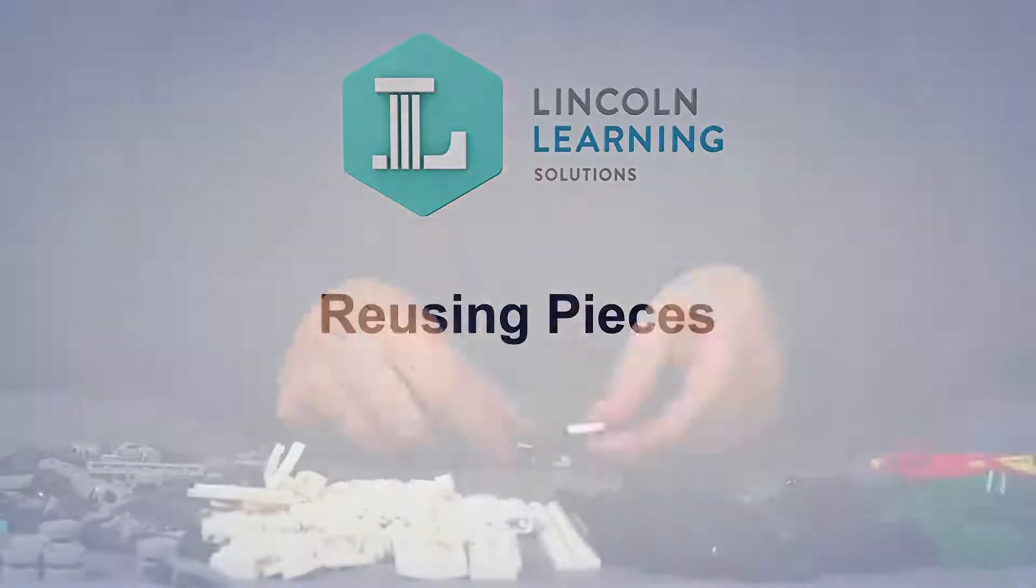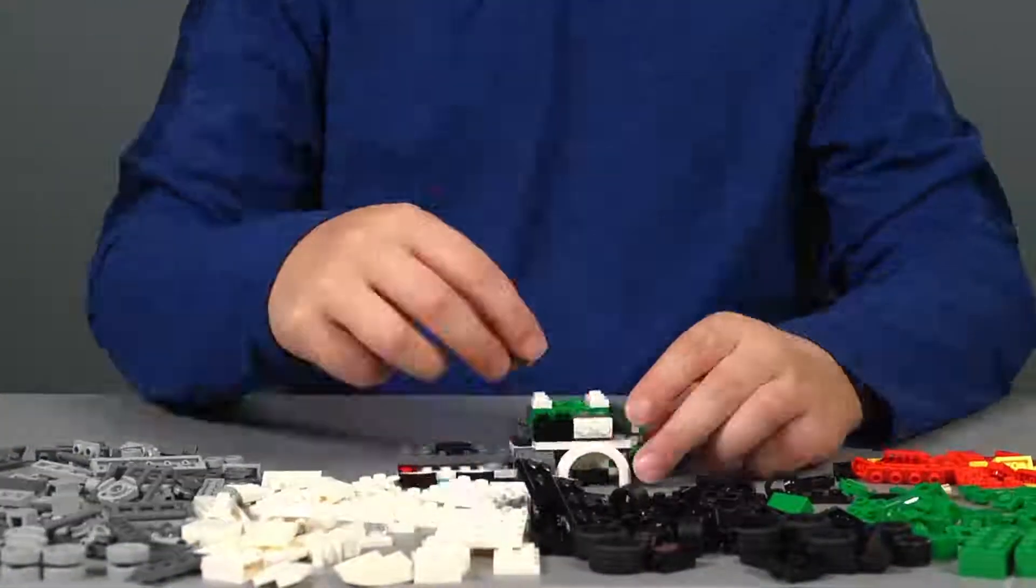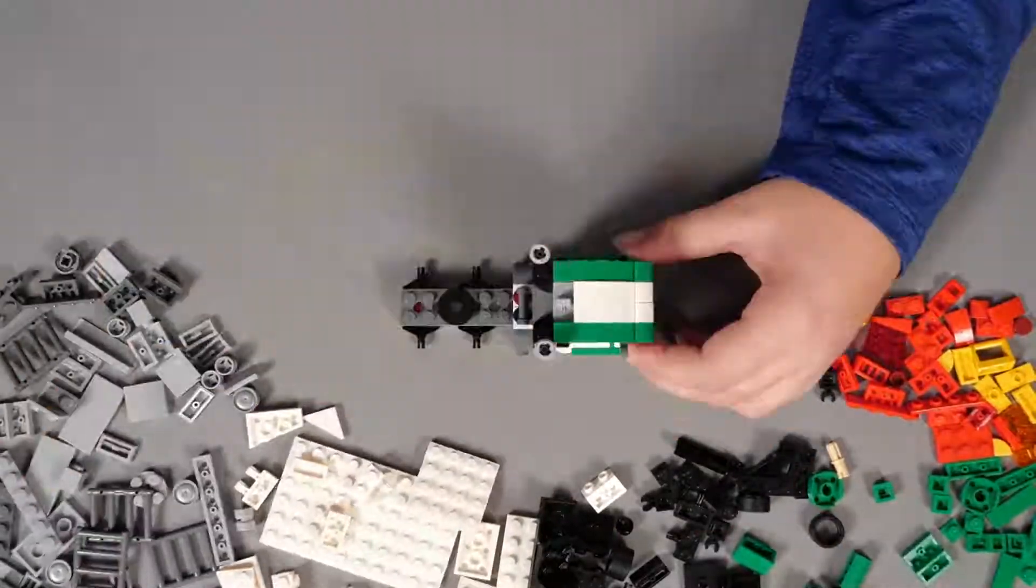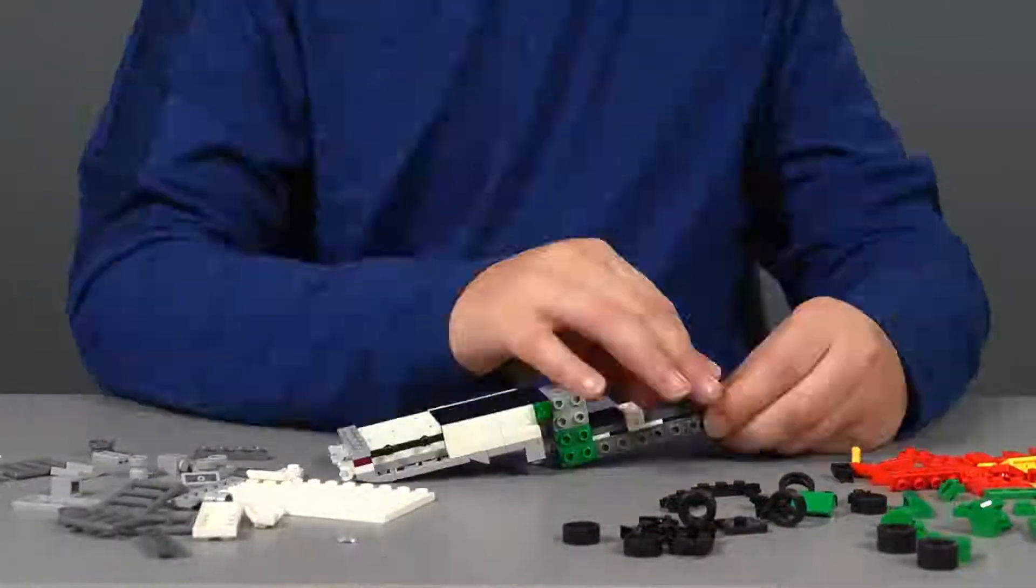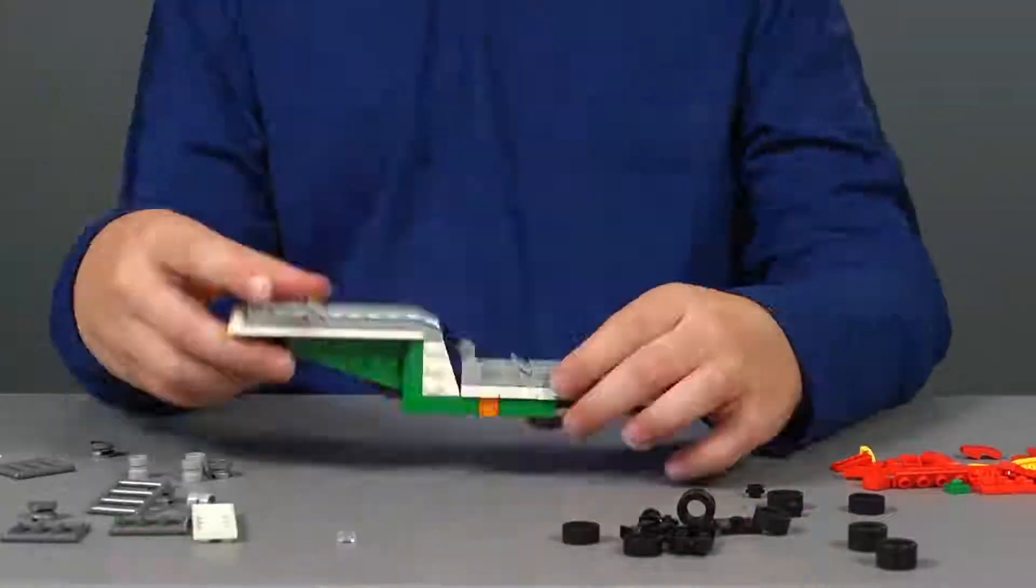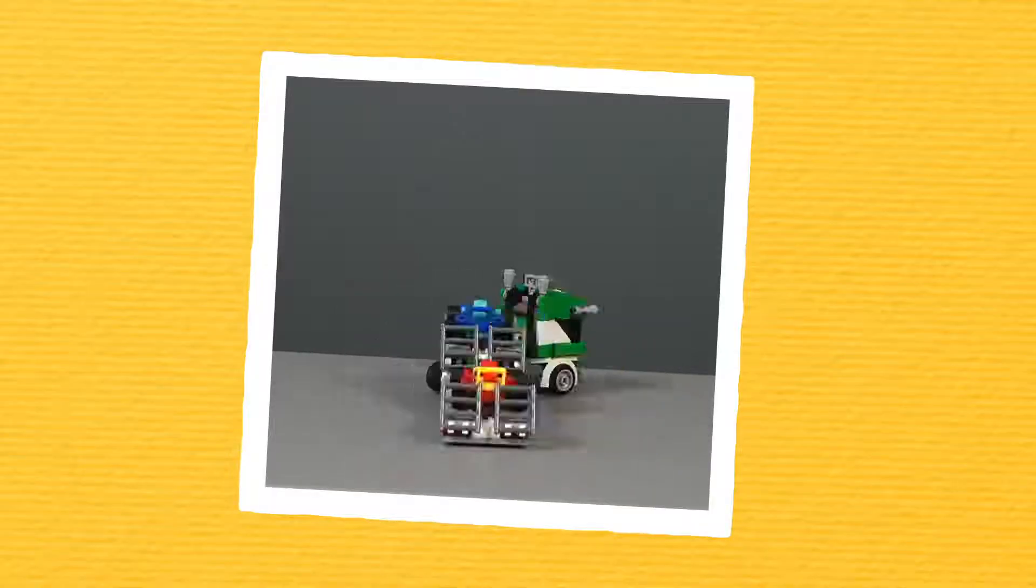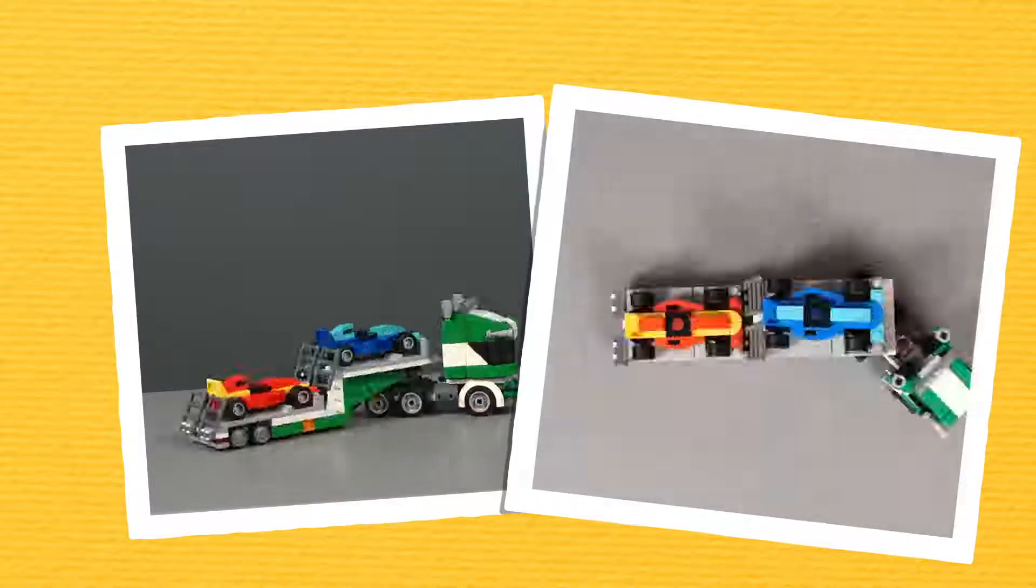Have you ever built something out of a set of plastic interlocking bricks? If so, you know that if you follow the directions, all of the small pieces can be put together to build one big design. But sometimes it's fun to take those same small pieces and see what else you can build with them.